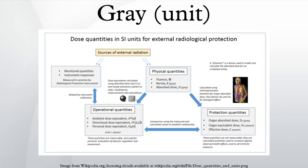Wilhelm Röntgen first discovered X-rays on November 8, 1895, and within a few years they were being used to examine broken bones. One of the earliest techniques of measuring the intensity of X-rays was to measure their ionization potential in air. The first International Congress of Radiology, which met in London in 1925, proposed a separate body to consider units of measure. This body, the International Commission on Radiation Units and Measurements, came into being at the second ICR in Stockholm in 1928. At their first meeting it was proposed that one unit of X-ray dose should be defined as the quantity of X-rays that would produce one electrostatic unit of charge in one cubic centimeter of dry air at zero degrees Celsius and a standard atmosphere. This unit was named the röntgen in honor of Röntgen, who had died five years previously.